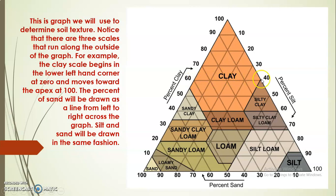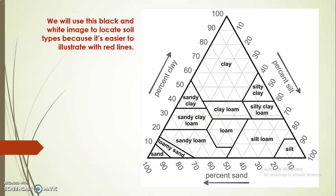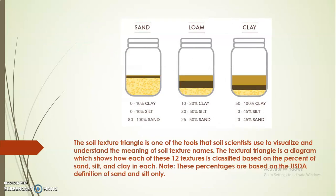For clay, if it's 60%, you'd draw a line right here. If it's 30% silt, that line goes down like this. For sand, from zero at the bottom to 100, say it's 80%, you draw a line like that. It's three metrics coming together, and where those three lines intersect you have your soil type. We'll use black and white to show it because it's easier to see.